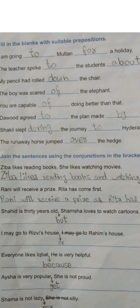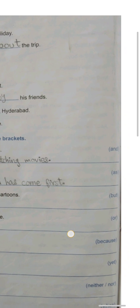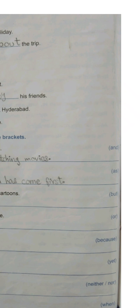Conjunctions are words that join two words or two phrases into one sentence. For example: and, as, but, or, because, yet, when, while, etc. You will have options and choose the appropriate conjunction based on the meaning.